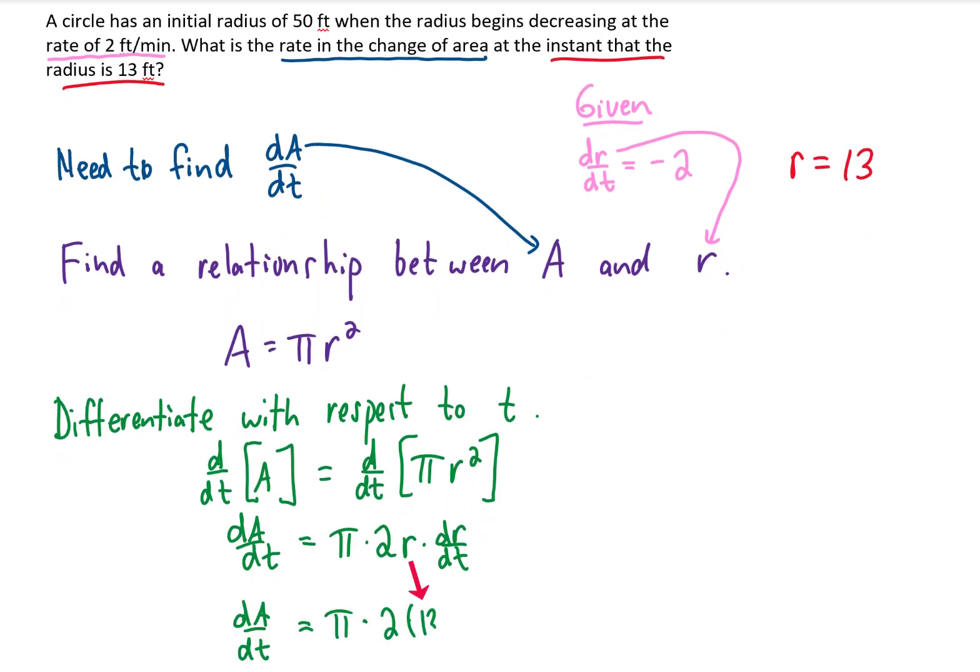We're plugging r equals 13, and dr/dt equals negative 2. Multiplying that all together gives us negative 52π. Our units can be found using several different methods, but a change in area with respect to time, since we're using feet and minutes, is going to be given by square feet per minute.